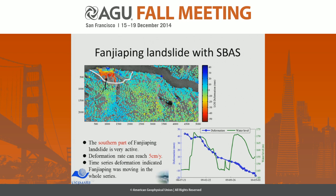For the Chen Jiangping landslide, we use PS-InSAR to derive the deformation distribution. There is obvious deformation, and the deformation rate is about 5 centimeters per year. Also, the deformation is correlated with the water level change.